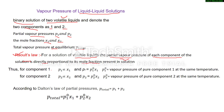For component 1, partial vapor pressure P1 is directly proportional to its mole fraction X1. In the same way for component 2, partial vapor pressure P2 is directly proportional to its mole fraction X2. If we remove the proportionality sign, we get a constant P01.